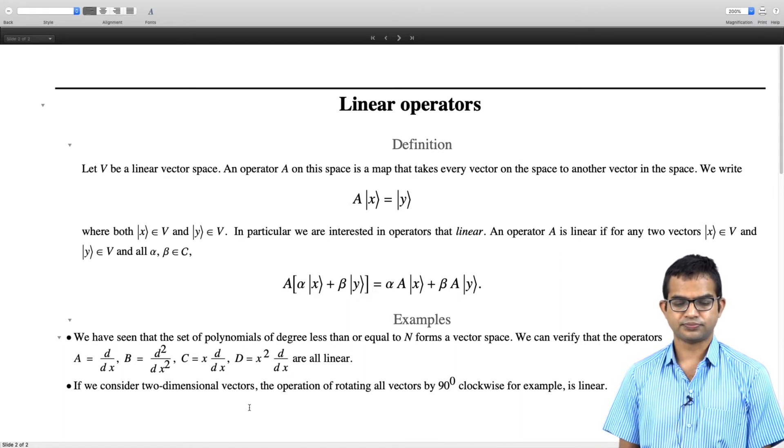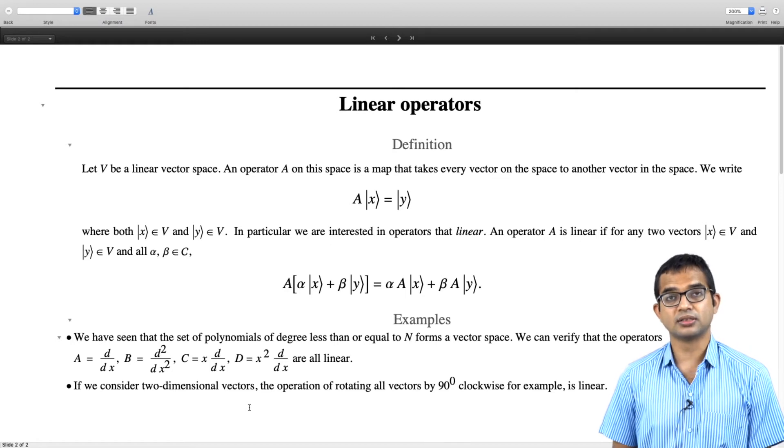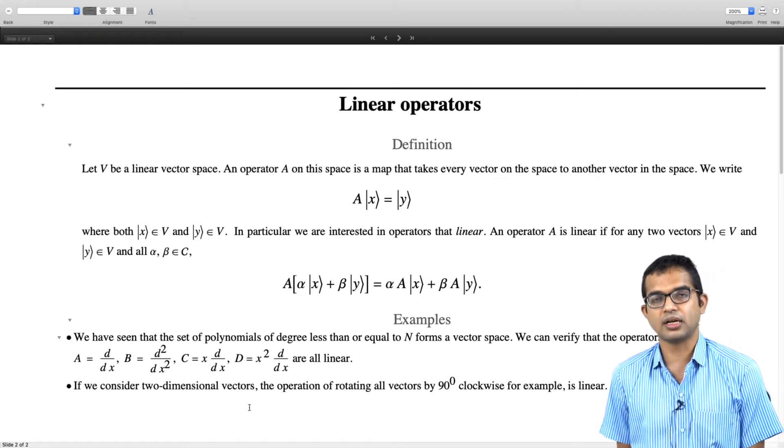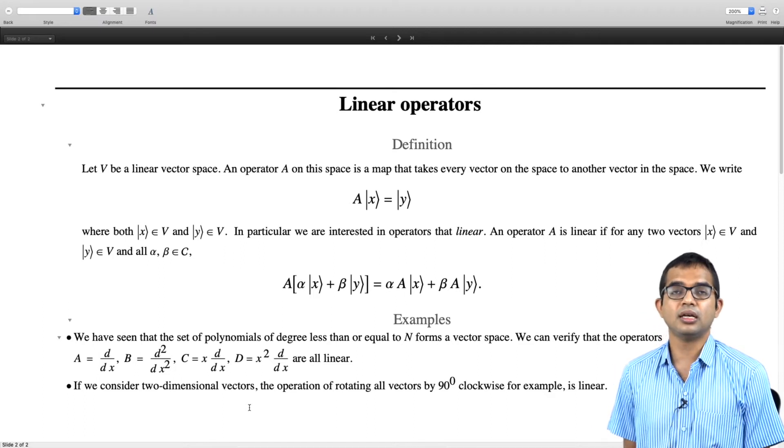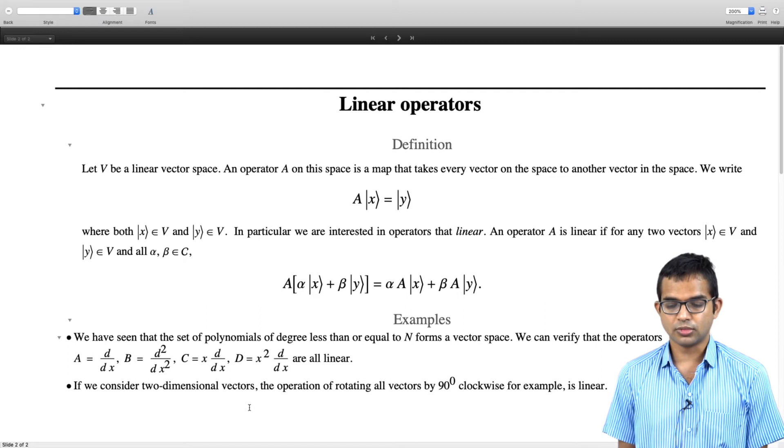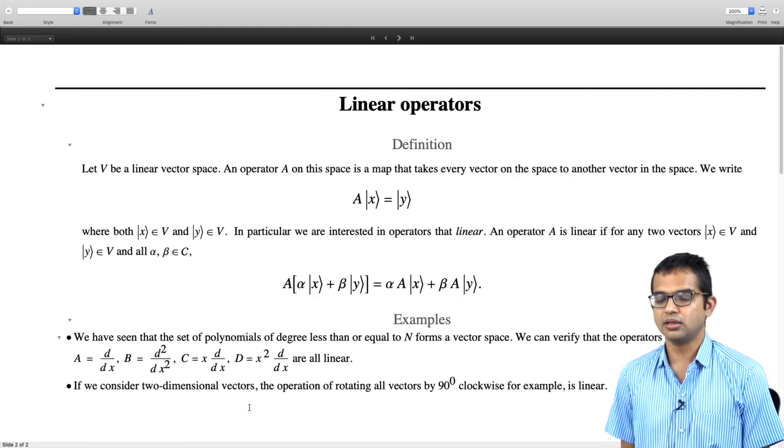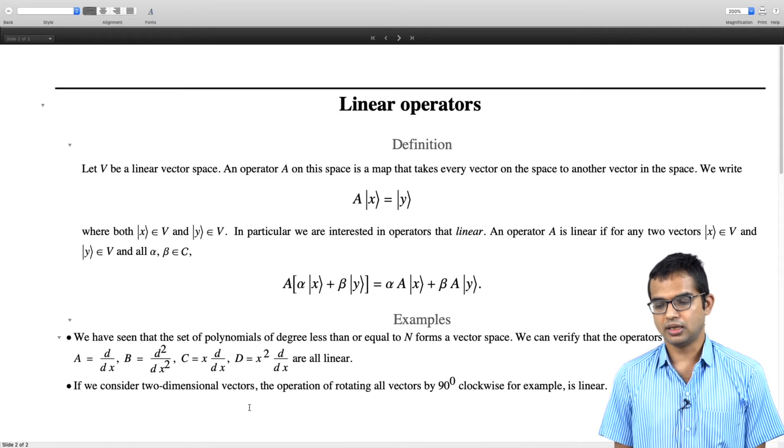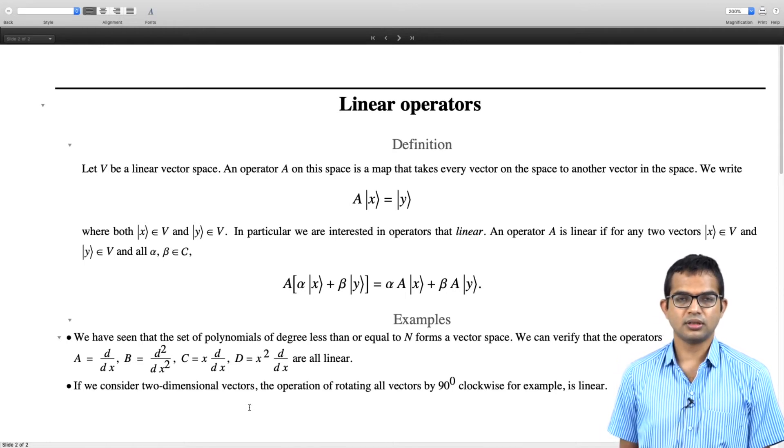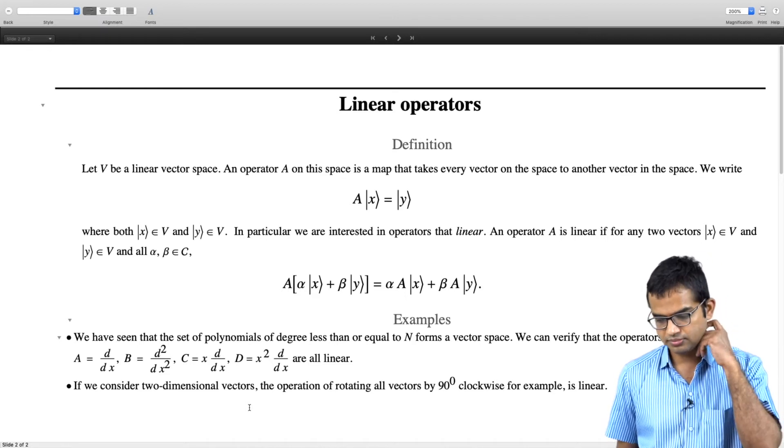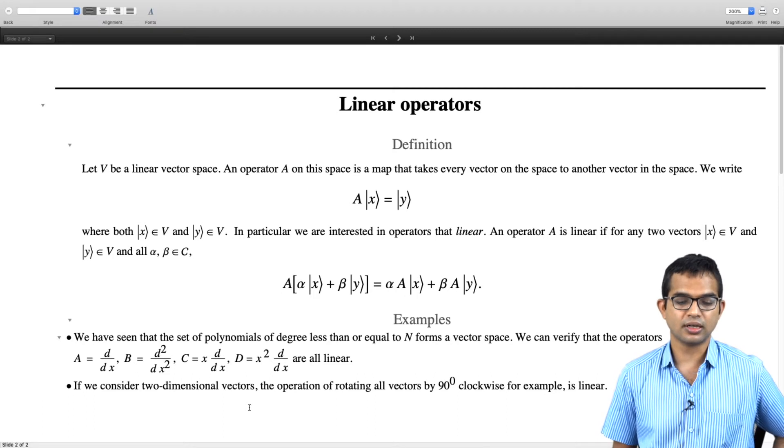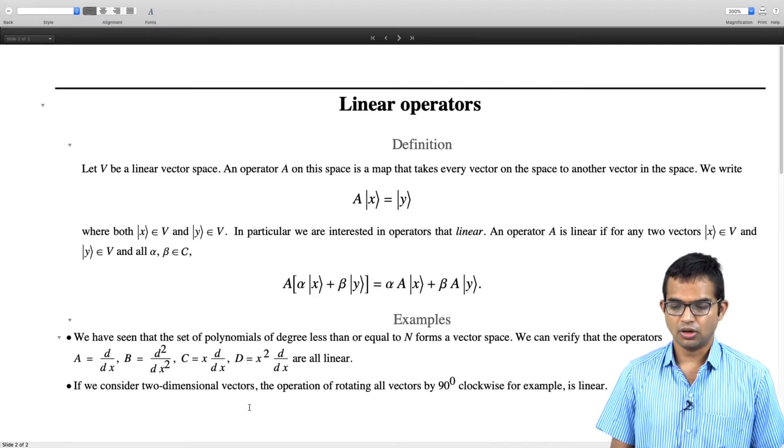You can also think of two dimensional vectors and the operation of rotating all vectors by some angle. I have said 90 degrees clockwise, but any angle, as long as all vectors are rotated by the same angle, then you have a linear operation. You can come up with operations on vectors which are non-linear in nature just to contrast against this.